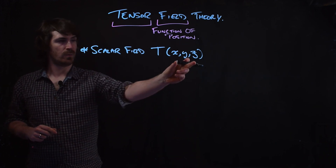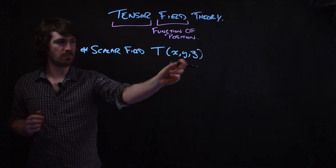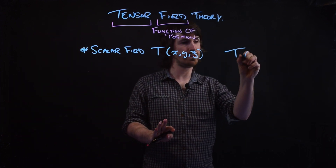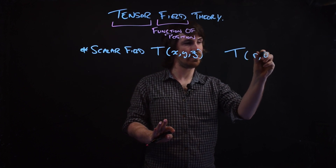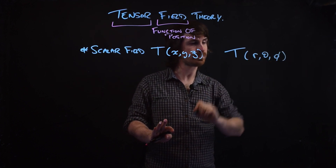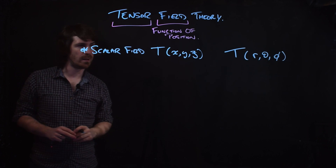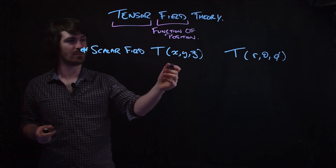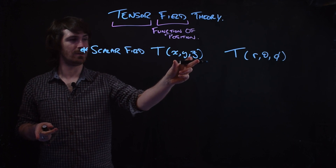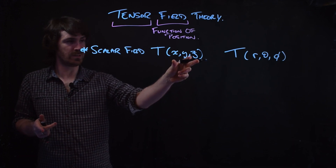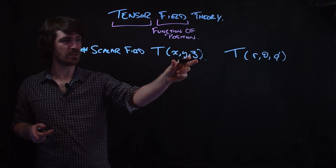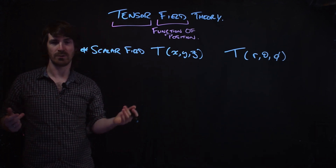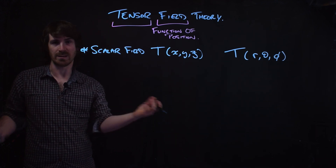We don't have to use Cartesian coordinates. We could just as well use spherical polar coordinates, with R, theta, and phi. It should be clear that the temperature in the room doesn't depend on whether we set up a Cartesian or a spherical polar coordinate system. The temperature is independent of that.